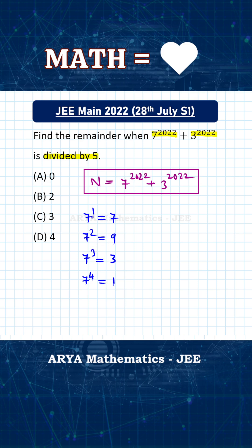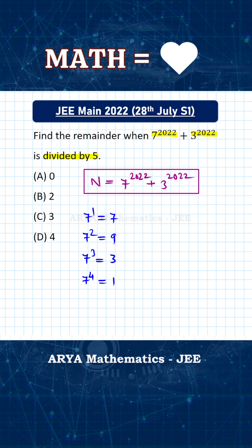Whenever the exponent is a multiple of 4, the digit at unit place is 1. Whenever the exponent is of the form 4n + 2, the digit at unit place is 9. For 7 raised to 2022, the exponent 2022 is of the form 4n + 2, so the digit at unit place is 9.